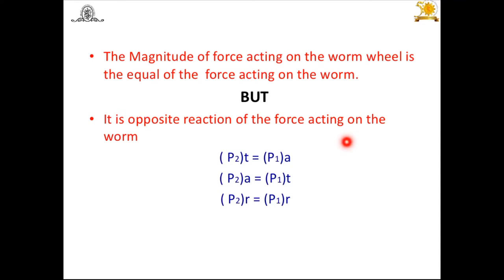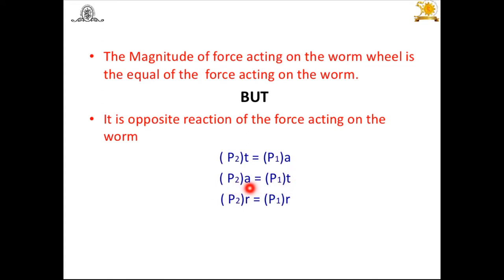The magnitude of the forces acting on the worm wheel is equal to the forces acting on the worm, but they are reactions in opposite directions. Therefore, to find out the forces on the worm wheel: the tangential component of the worm gear equals the axial component of the worm; the axial component of the worm wheel equals the tangential component of the worm; and the radial components of the worm and worm wheel remain equal in magnitude but opposite in direction. This means force analysis of only the worm is sufficient, and from it we can directly determine the forces on the worm wheel.